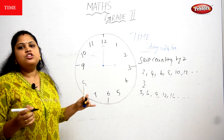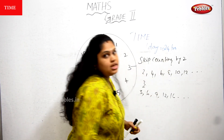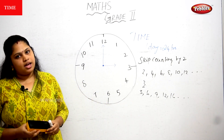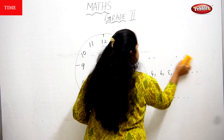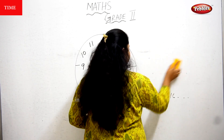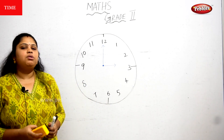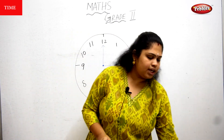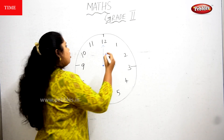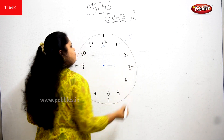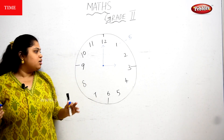Time also follows the skip counting method, but not by 2 or 3 — time follows skip counting by 5. So we are going to follow skip counting by 5, which is very easy. I'm starting with the number 5 for position 1.